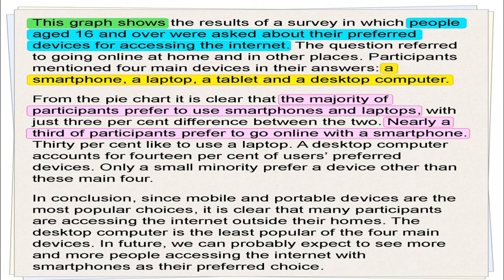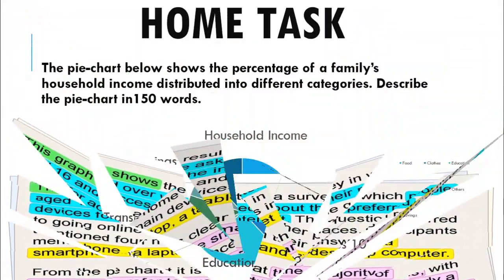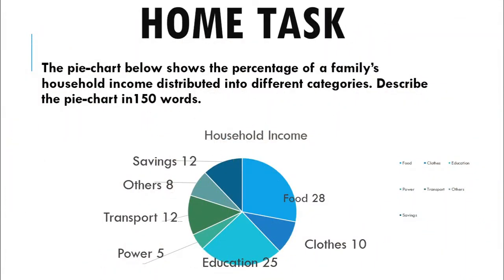So how did we analyze this pie chart? First, we started by saying exactly what the pie chart shows. Secondly, we mentioned the survey question. Thirdly, we explained the different sections of the pie chart. We also described the key findings. This lesson will not be effective if you don't practice, so here is a home task given for you — try to do it by yourself and submit it in the comment box.